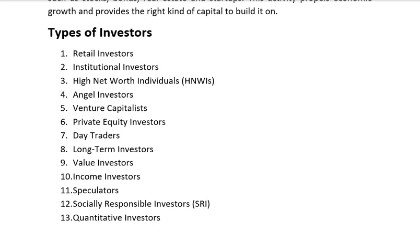Angel investors are those who offer capital for startups or early-stage companies in exchange for ownership equity. They often mentor and support the entrepreneurs they invest in. Fifth is venture capitalists. Venture capitalists manage pooled funds from various sources, including institutional traders, to invest in high-potential startups. They often take an active position in the management and strategic direction of the companies they invest in. Sixth is private equity investors, who invest in private companies by buying ownership stocks.